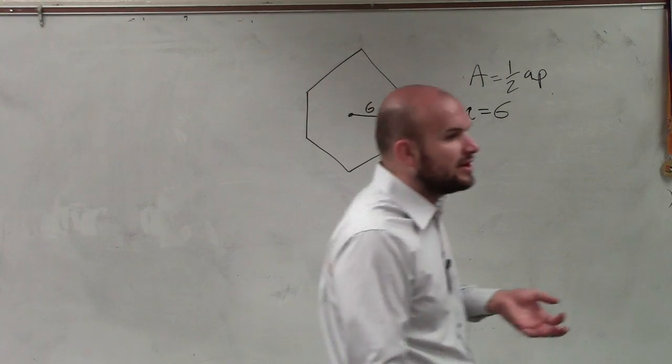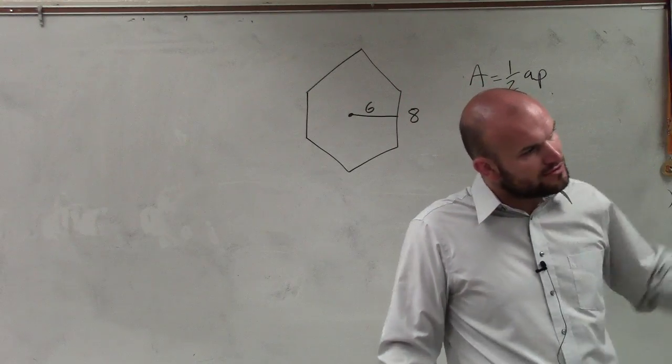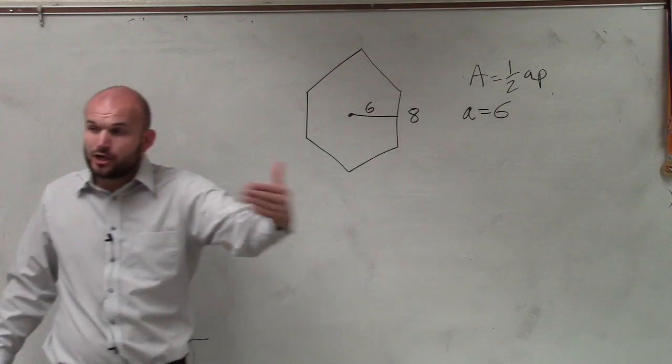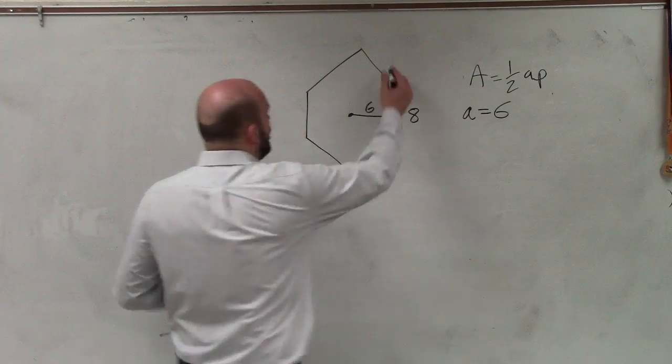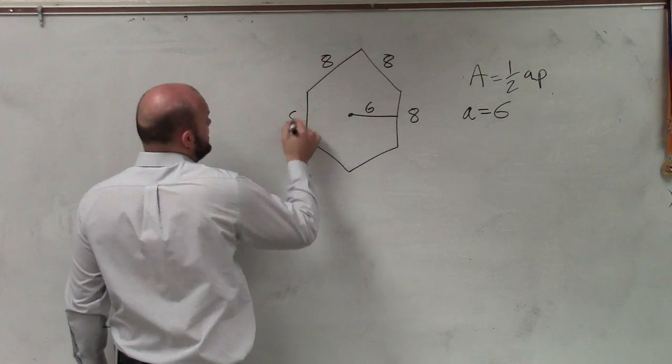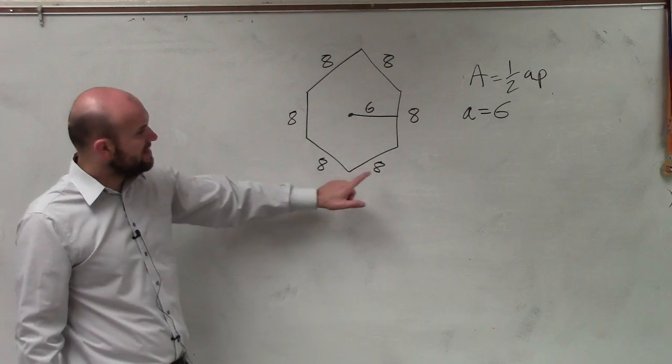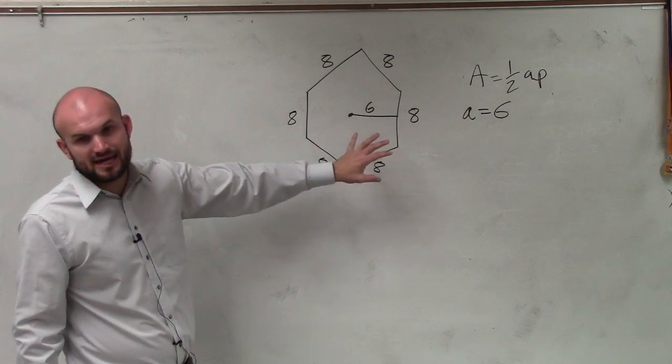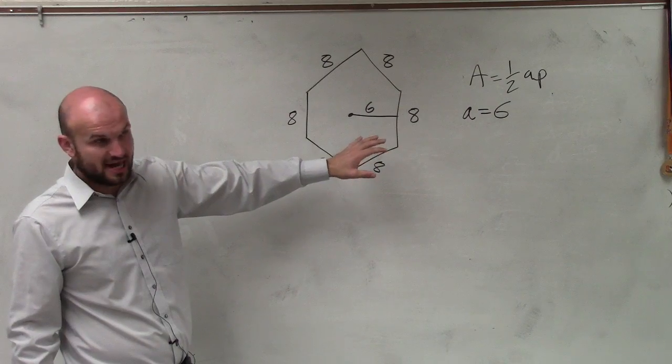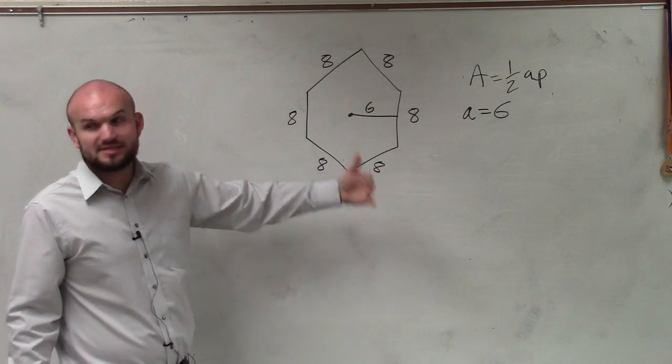Now remember, the perimeter actually is the distance around our figure. So since it's a regular polygon, we know that all the sides are exactly the same length. So I have 8, and so I look at this, and this is a hexagon, has six sides. So I do 8 times 6.